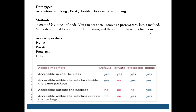A method is also called a function. In C and C++, they call it a function, but in Java, those functions are called methods. Access specifiers are also a very important interview question. The access specifier is the access which you give to your variable and to your methods.